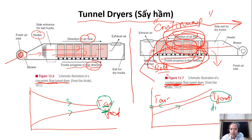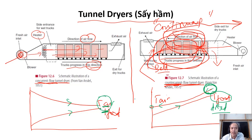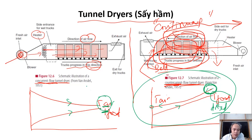In terms of quality, in counter-current the food is already dry on one side, but it is then in contact with very hot incoming air, which is not good for quality — for sensory and nutritional properties. In co-current, when the food is already dry it is in contact with low-temperature air, so it is better for food that is sensitive to heat. Co-current is more suitable for preserving the quality of the food.